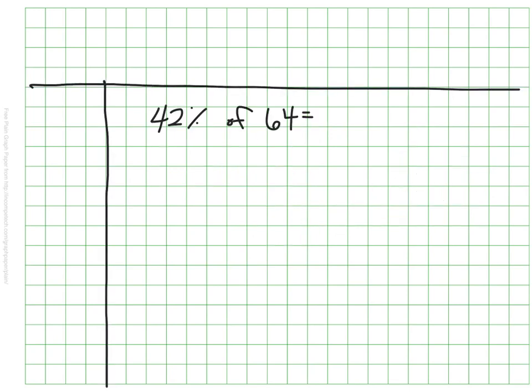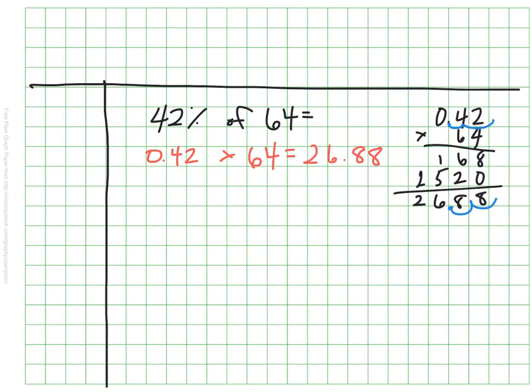Let's try another. Take a moment to do 42% of 64. My first step is going to be to turn this into 42 hundredths and multiply it by 64. How'd you do? Did you find 26 and 88 hundredths? This would be a good strategy to use in real life if you wanted to find 42% of a bill which is $64 — you'd be able to calculate pretty quickly to find it's $26.88.